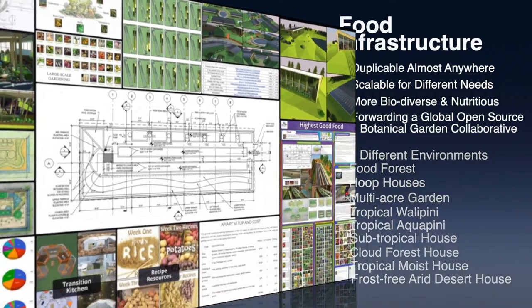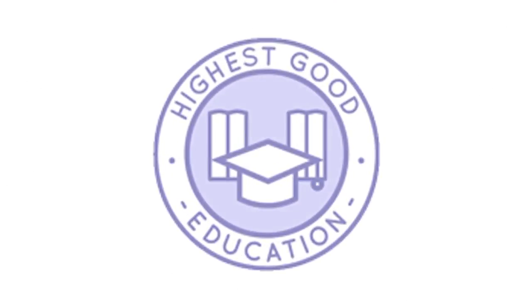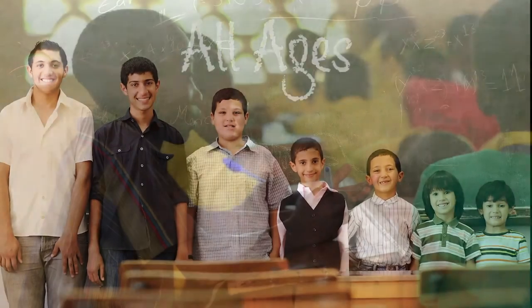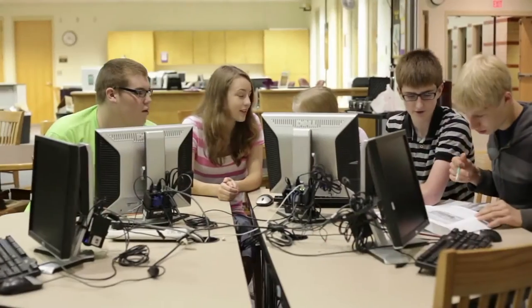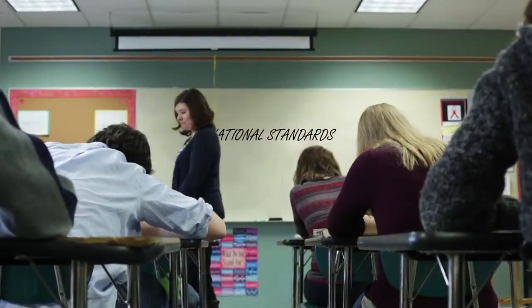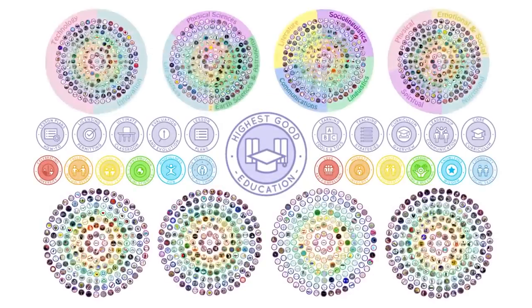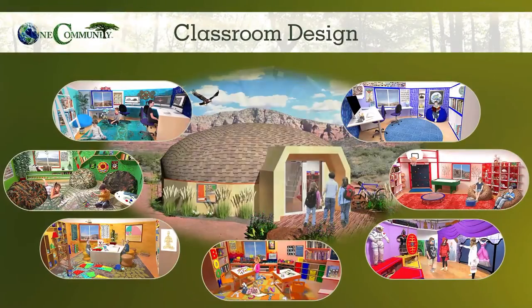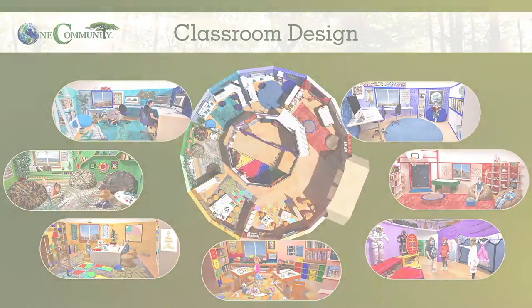The next component is highest good education. This component is complete and pretty much ready to launch once we're on the property. One Community's approach to highest good education is designed for all age groups, adaptable to any schooling environment, inspiring and fun for all participants, and includes national standards, all subjects, lesson plans, teaching strategies, learning strategies and tools, classroom design, and more.